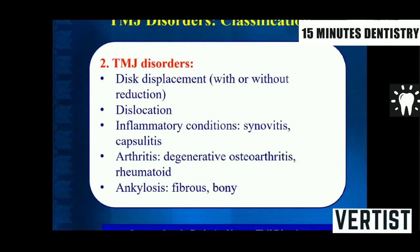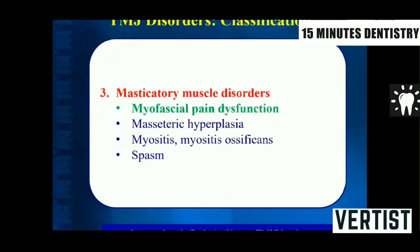The second category covers other components of TMJ disorders — displacement with or without reduction, dislocation, inflammatory conditions like synovitis, capsulitis, arthritis, and ankylosis. The third category is masticatory muscle disorders, in which the most commonly asked and very important condition is myofascial pain dysfunction syndrome.